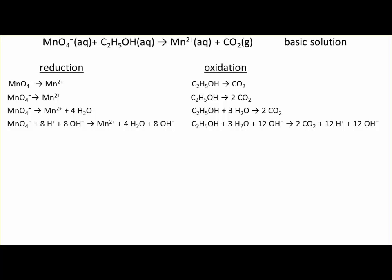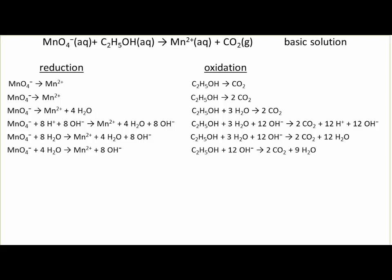Now in a basic solution, we add the following. For each H plus ion added to one of the two sides, add one OH minus ion to each side. At this point, one can combine the H plus ions and OH minus ions to form water molecules, and one can further simplify by cancelling redundant water molecules on each side.